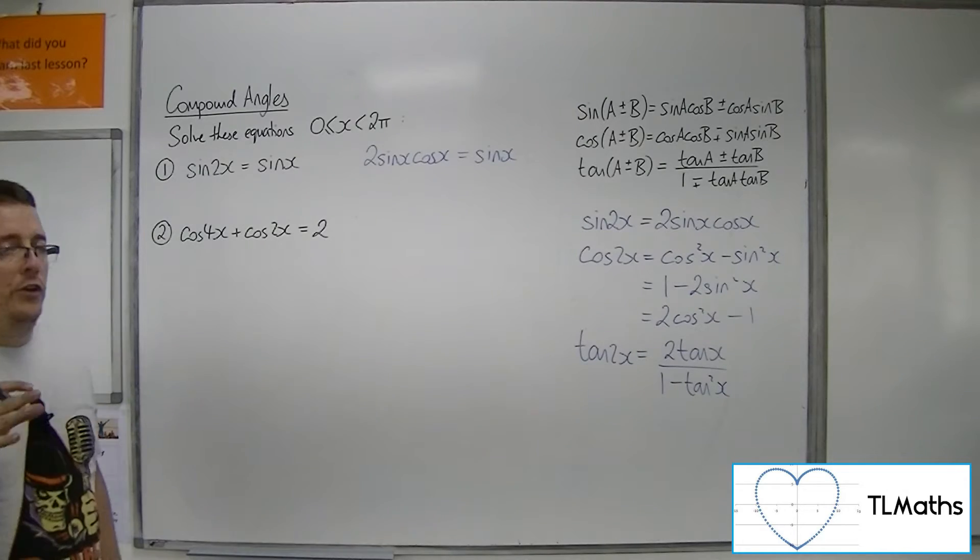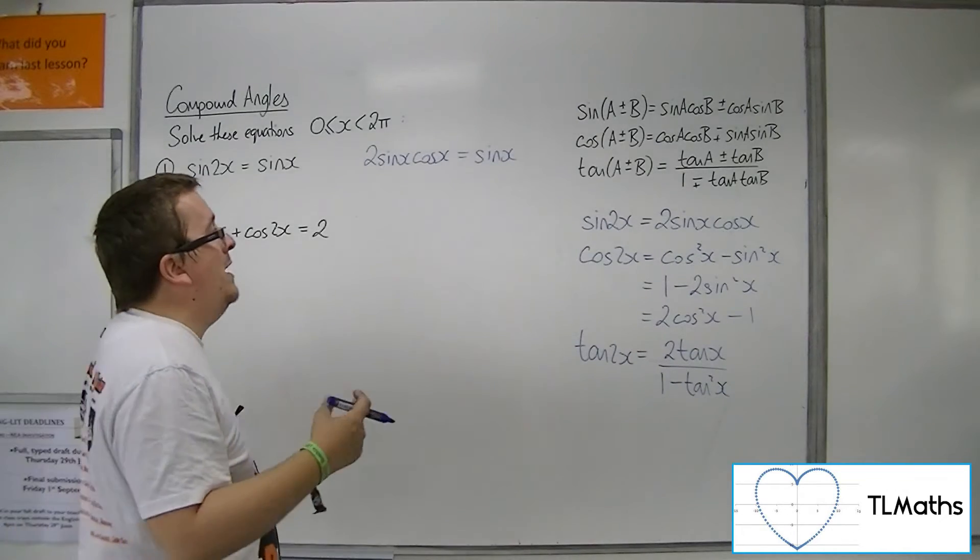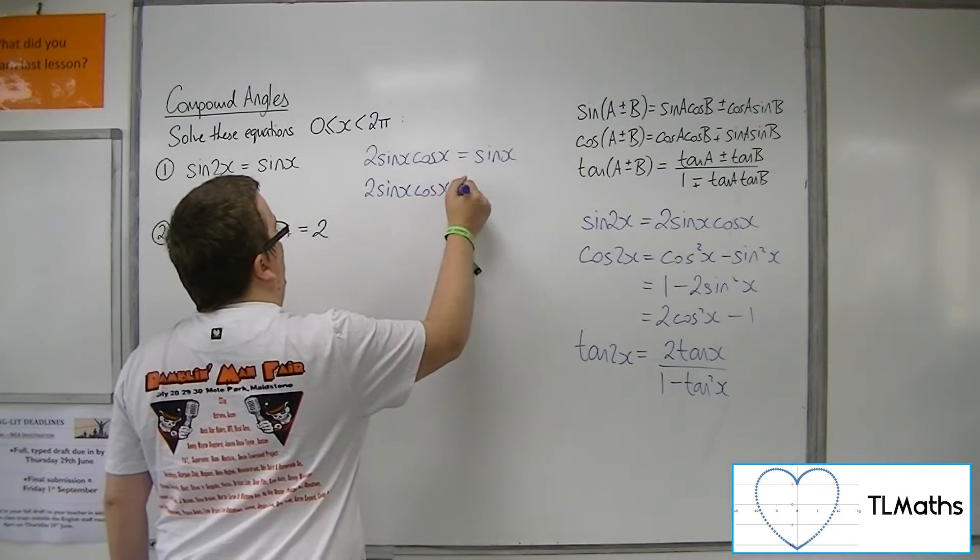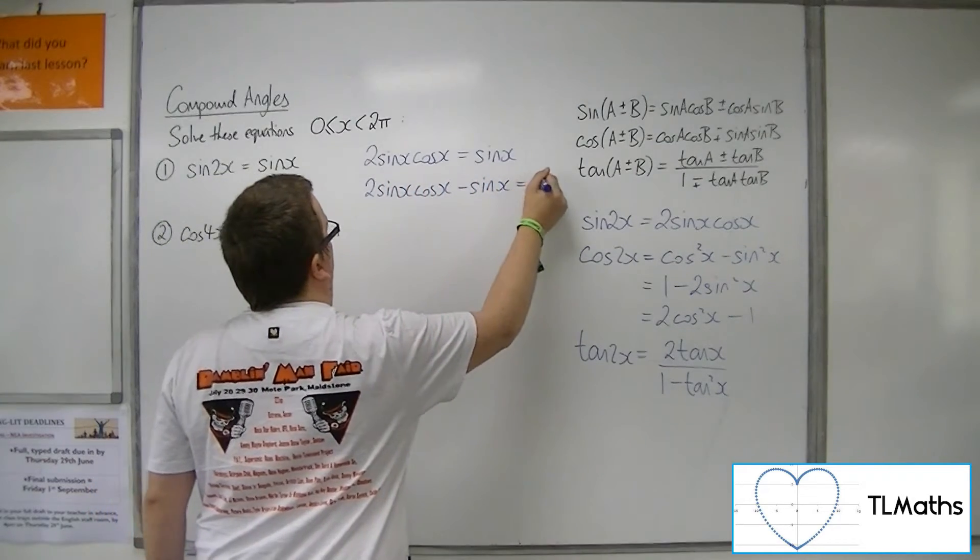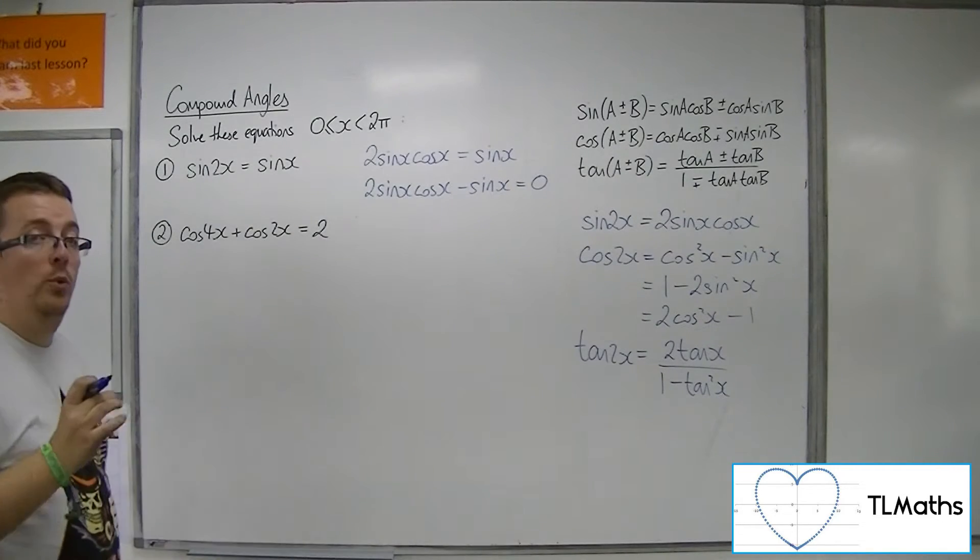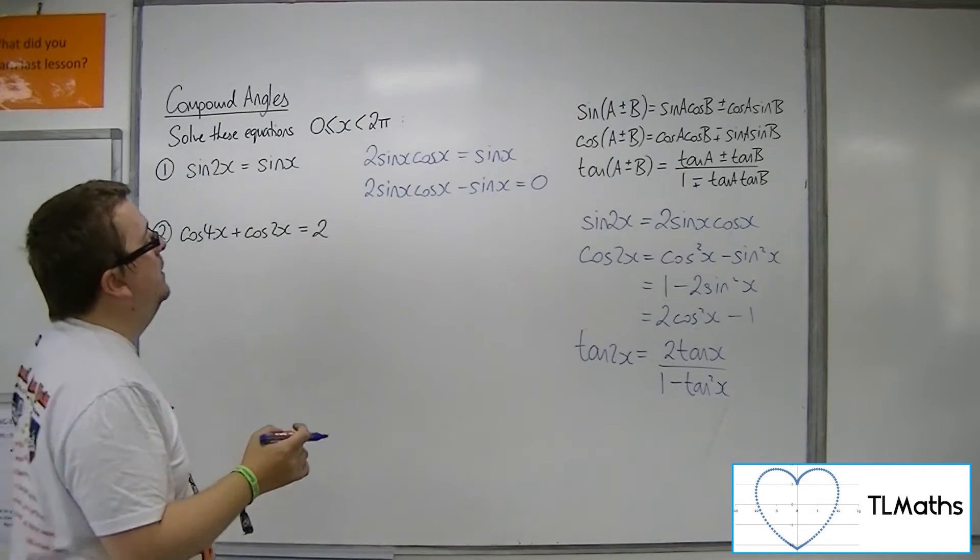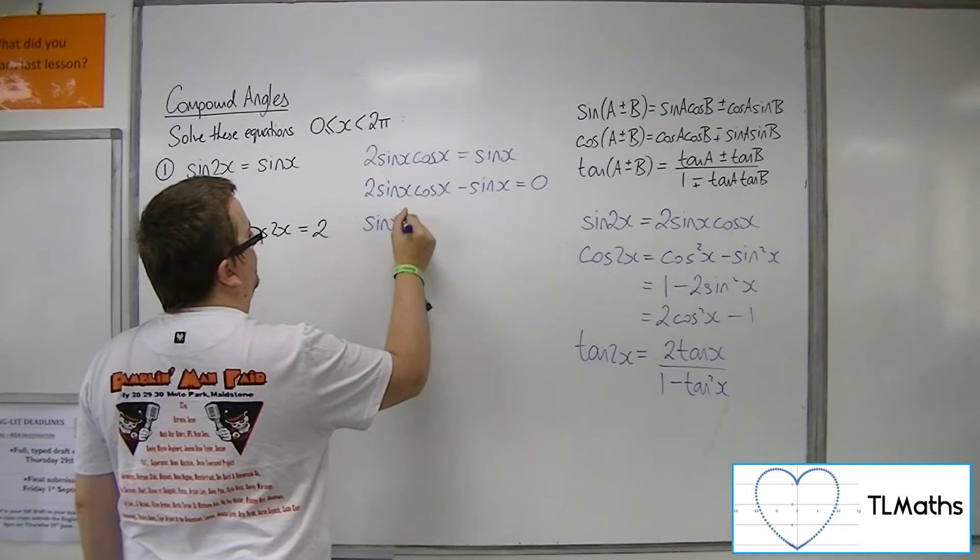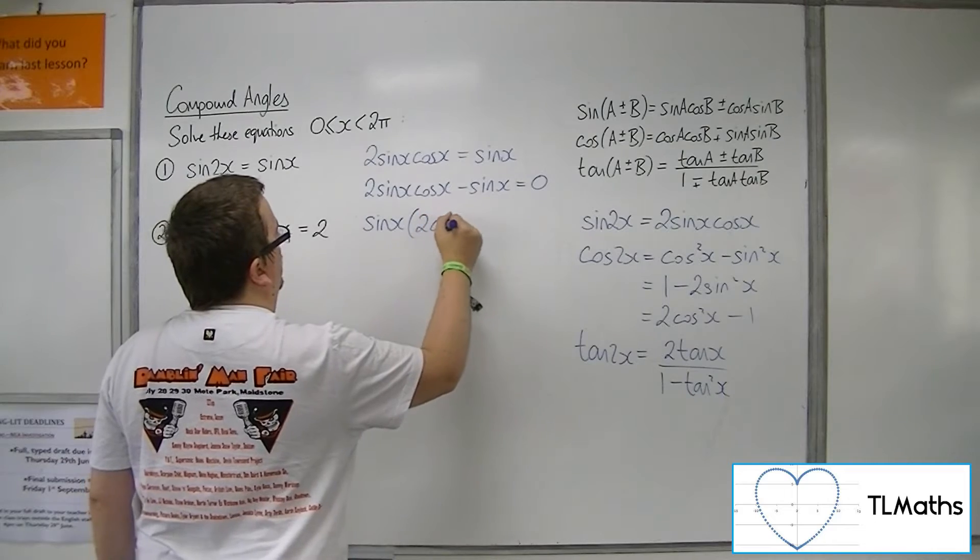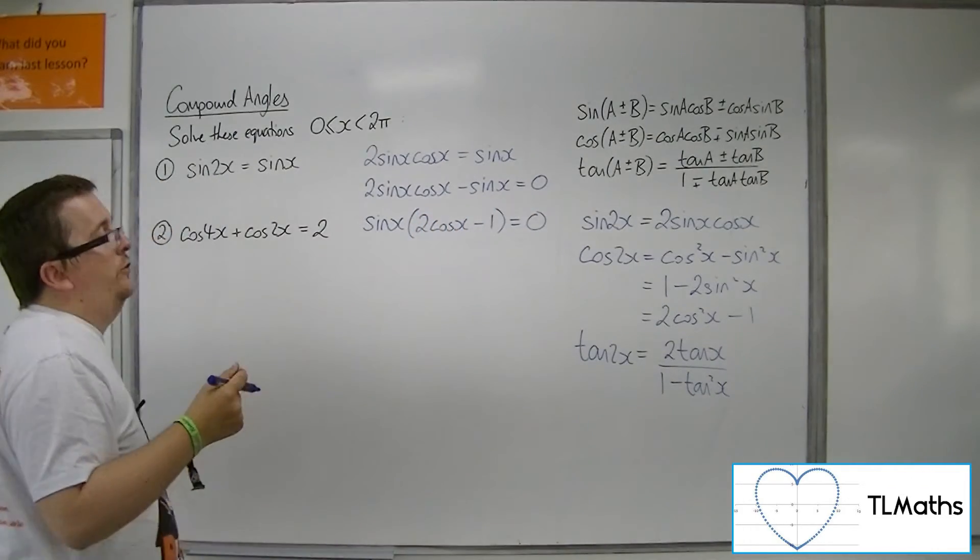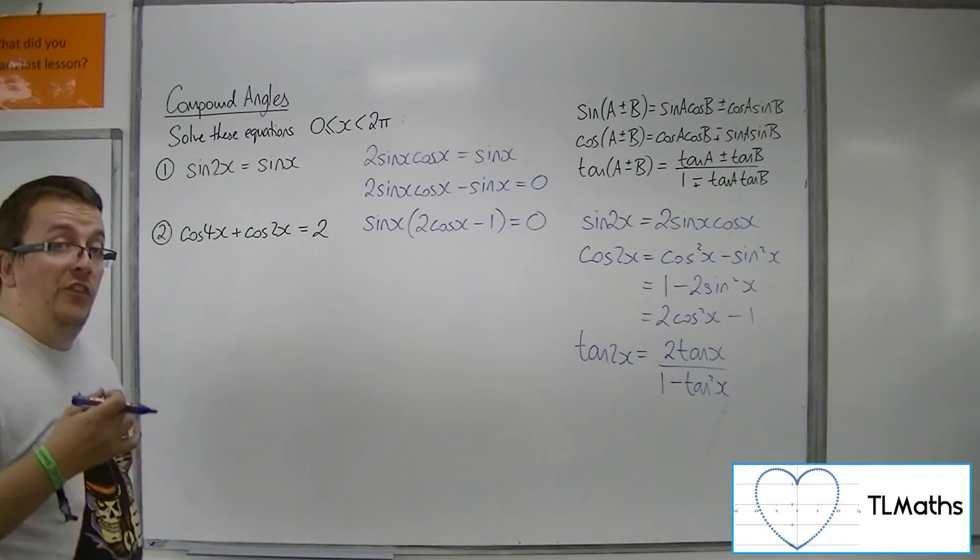Now in order to solve that equation, you need to subtract the sin x from both sides and then factorize. You cannot divide both sides by sin x because you'll lose solutions. So factoring out the sin x of both terms, you're going to get 2 cos x minus 1 inside the bracket and it's all equal to 0.